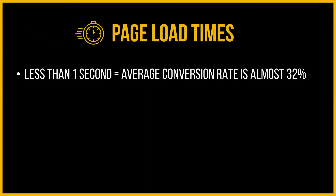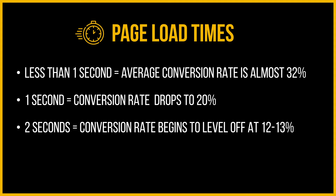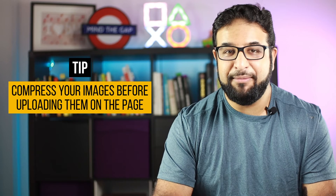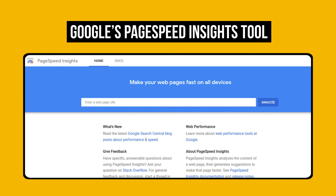Research on the impact of site speed on conversion rate by Potent in 2015 found that when web pages load in less than one second, the average conversion rate is almost around 32%. At a one second load time, the conversion rate already drops to 20%, and at two seconds, the conversion rate begins to level off at 12 to 13%, further reaching its lowest at a five second load time. A great tip is to compress your images before uploading them on the page. You can also use Google's PageSpeed Insights tool, which will offer tips on how to improve your website's load time.